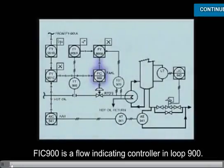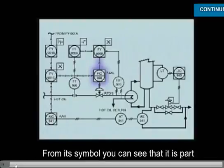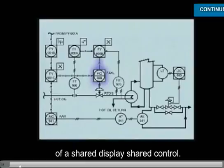FIC 900 is a flow indicating controller in Loop 900. From its symbol, you can see that it is part of a shared display, shared control.